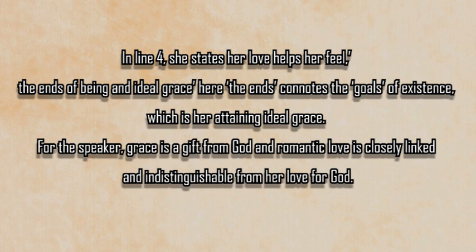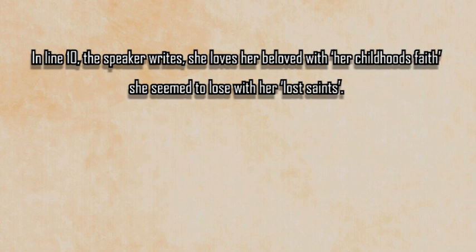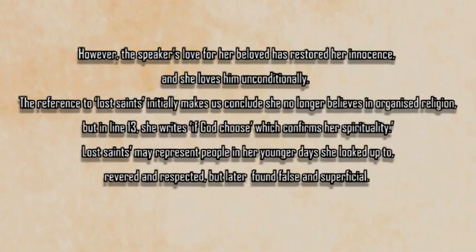In line 4, she states her love helps her feel the ends of being and ideal grace. Here, the ends connotes the goals of existence, which is her attaining ideal grace. For the speaker, grace is a gift from God, and romantic love is closely linked and indistinguishable from her love for God. In line 10, the speaker writes she loves her beloved with her childhood's faith she seemed to lose with her lost saints. Childhood faith is a reference to a child's unconditional love for somebody close to them, that is often lost on attaining adulthood. However, the speaker's love for her beloved has restored her innocence, and she loves him unconditionally.